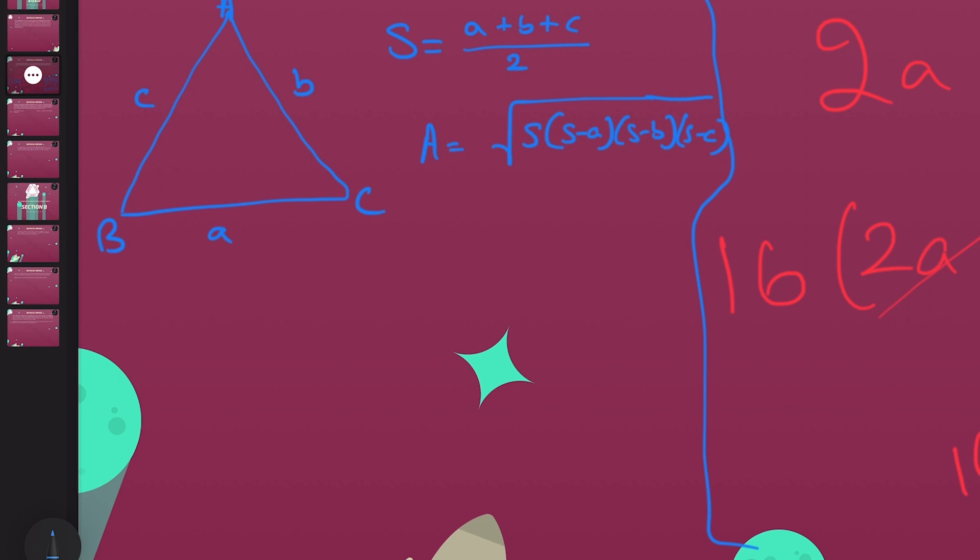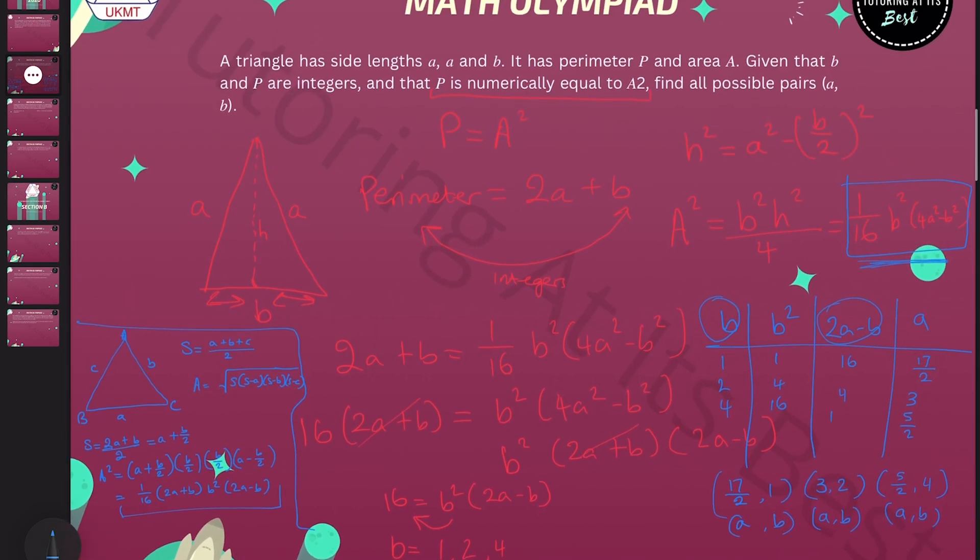As you can see here, we can have S being equal to (2A plus B) over 2. That is equal to A plus B over 2. We can calculate A² that way. If I note that down, that could be seen as (A plus B) over 2, and B over 2, and B over 2, and (A minus B) over 2. That gives us 1 over 16, (2A plus B), B², and (2A minus B). That gives us the same position as we were in the current method I showed you today.